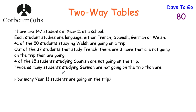Here's one for you to try — feel free to pause the video. There are 147 students in Year 11 and each student studies one language: French, Spanish, German or Welsh. 41 out of the 50 students studying Welsh are going on a trip. Out of the 37 students studying French, there are three more not going on the trip than going. Four out of the 15 students studying Spanish are not going on the trip. Twice as many students studying German are not going on the trip as are. How many Year 11 students are going on the trip?